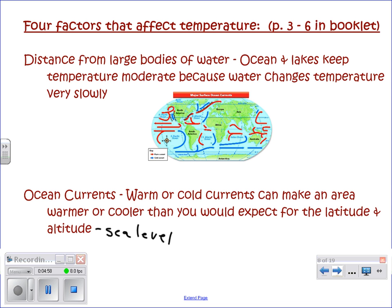Ocean currents are interesting because they are going to change the expected climate at a given area. Warm or cold currents might make the climate in an area warmer or cooler than you would expect for the latitude and altitude. There is a map showing some of the major ocean currents — warm water currents are red, cold water currents are blue. Along the Pacific coast of the United States, there is a cold water current called the California Current coming down along the Pacific coast. On the Atlantic coast, there is a warm water current — the Gulf Stream — coming up.